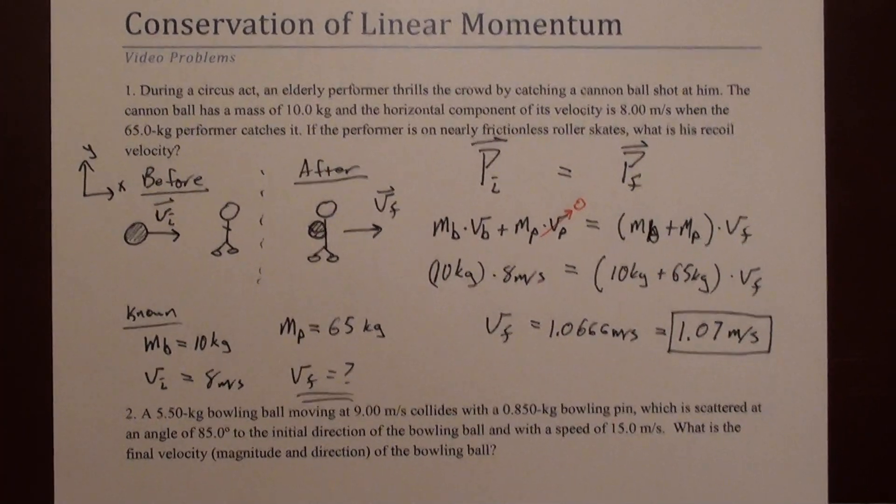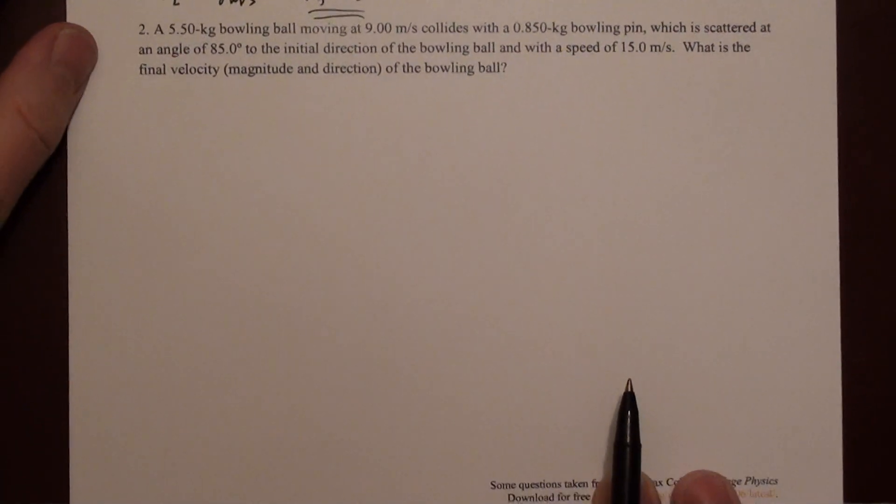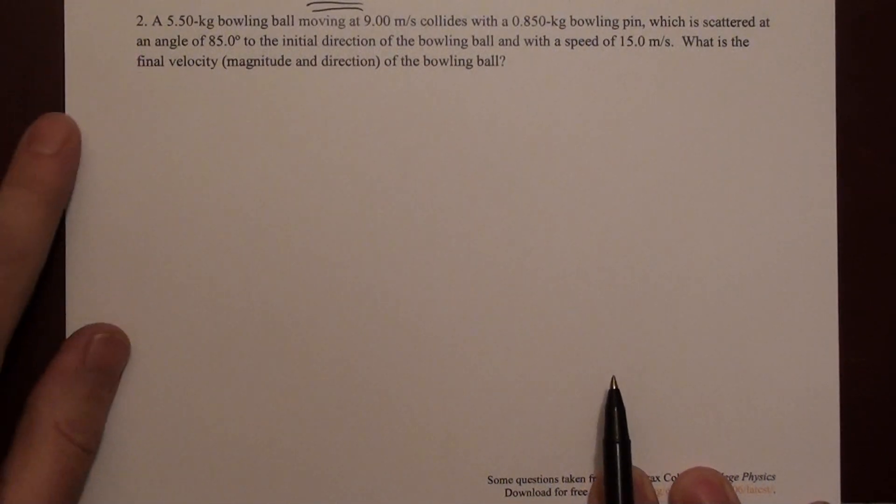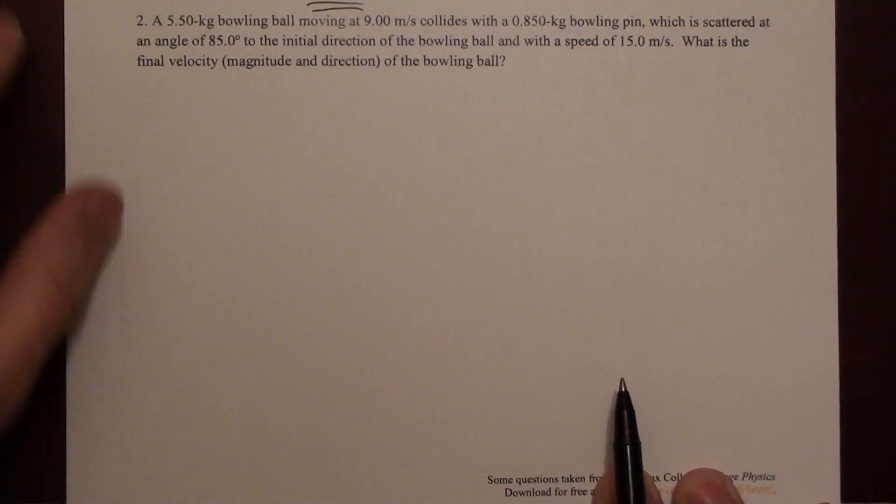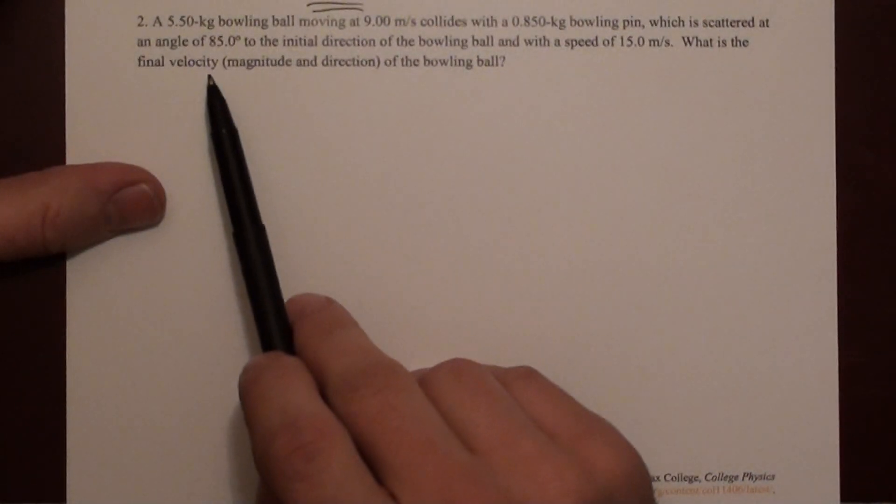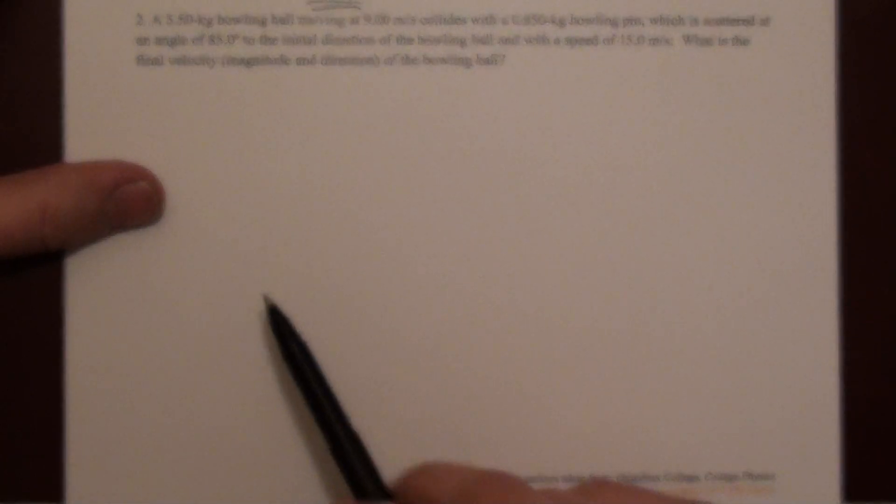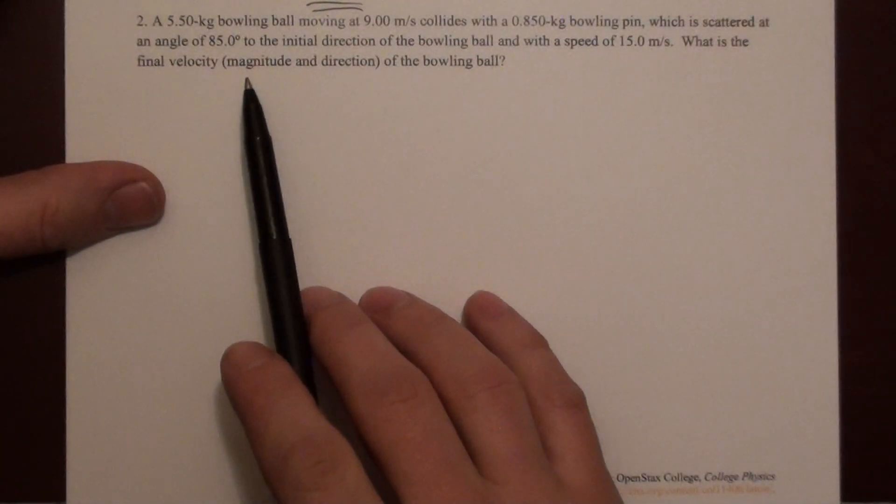The second problem is slightly more involved. It involves a bowling ball colliding with a bowling pin. The bowling pin is scattered at some angle with some speed, and we want to know the velocity, so the speed and direction, of the bowling ball after this collision.